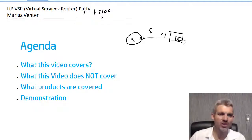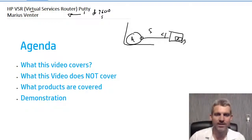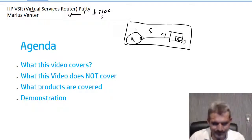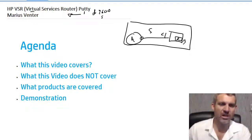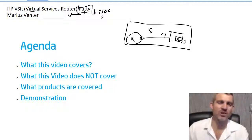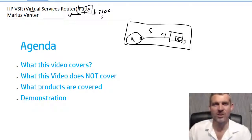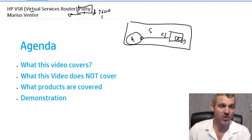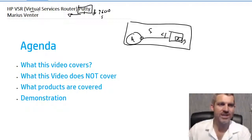This video is specifically about how to get PuTTY working in a virtual environment to talk to an actual virtual router. The products covered are PuTTY — it's free and widely used for CLI — and a DSR virtual services router, which is a virtual router running on top of a PC inside EVE-NG. That's the reason for this video: to show you how to create this environment.